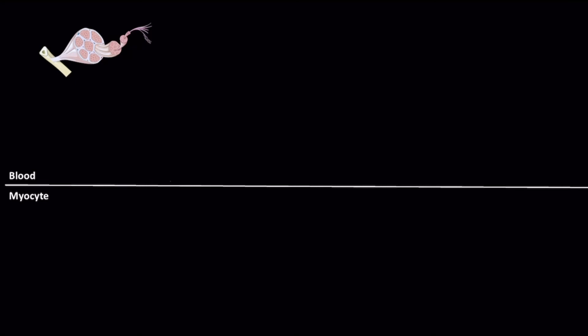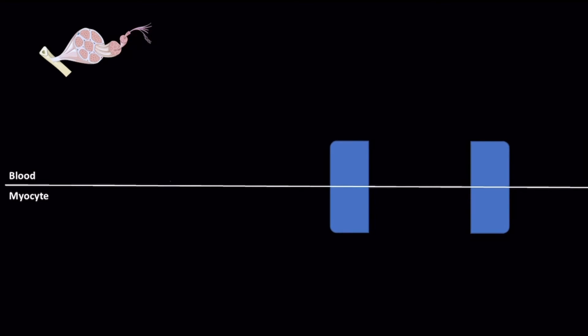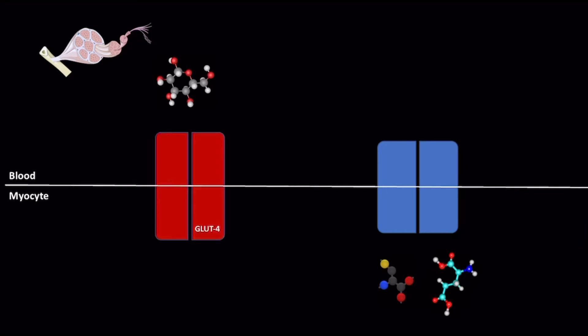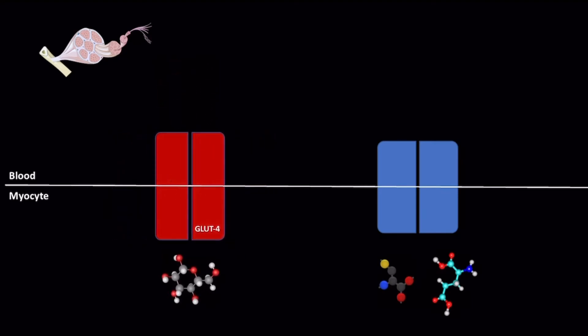IGF-1 initiates a signaling cascade in myocytes that will trigger the opening of specific channels in the cell membrane that allow amino acids to enter the myocytes. IGF-1 will also increase the uptake of glucose from the blood by increasing the number of GLUT4 transport proteins embedded in the cell membrane of myocytes. All the amino acids that enter can be used for muscle growth, aka muscle hypertrophy, while the glucose will provide the energy necessary for muscle growth.